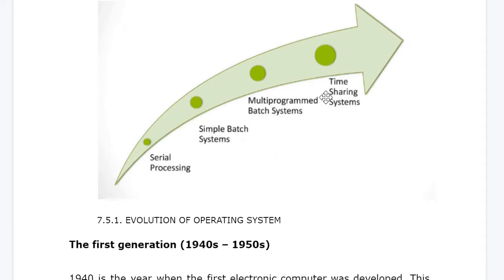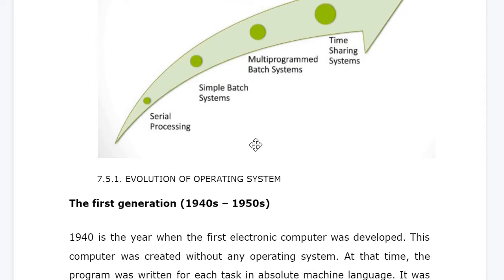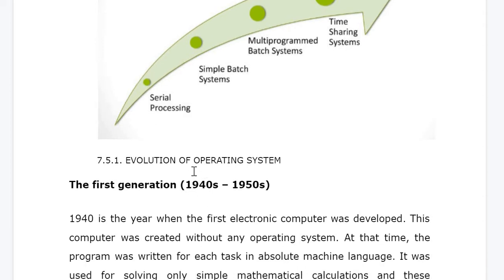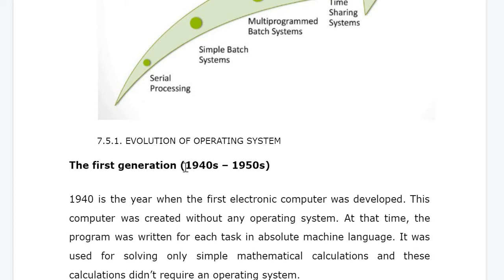Let's discuss each one of them one by one. This topic is sometimes asked in exams and is important from an exam point of view. The first generation of operating system was also called serial processing, and this was in the period between 1940 to 1950.